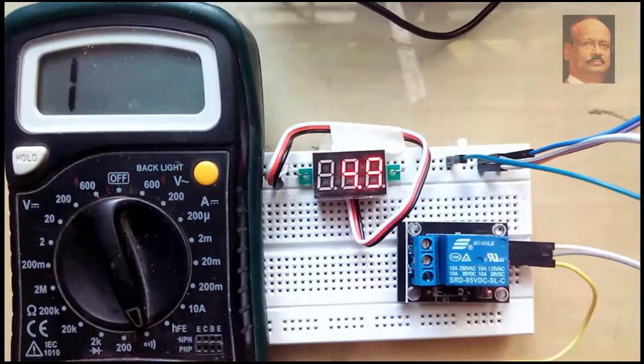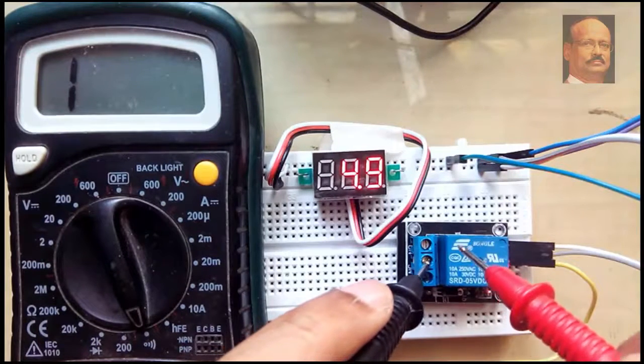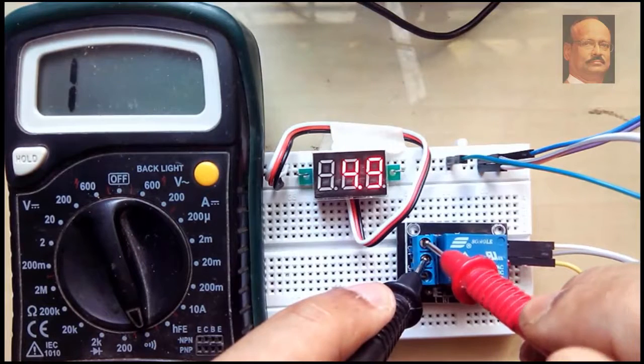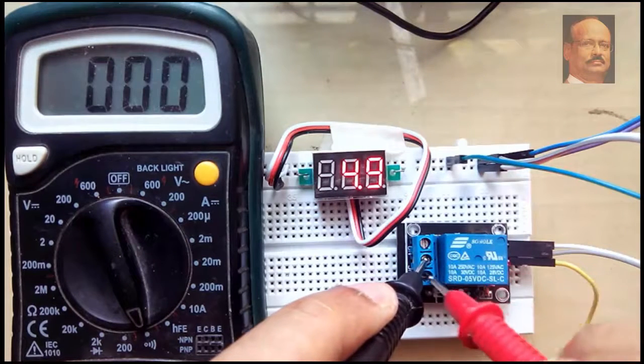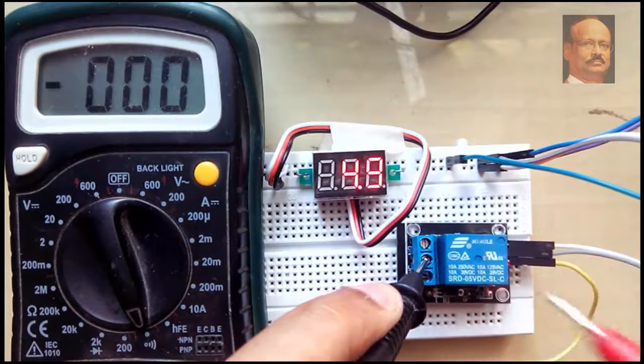And we will notice now that the common point to the NO point is now showing conduction, not this point. So this is the NO point.